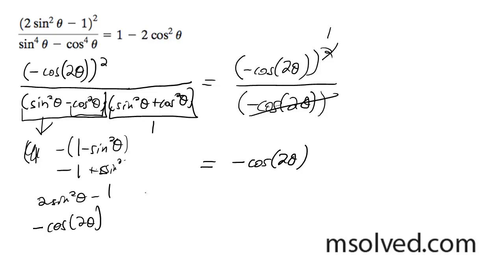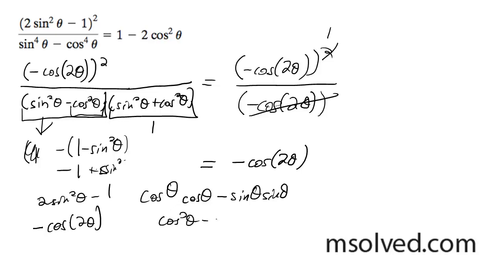The double angle is in the form cosine theta cosine theta minus sine theta sine theta, which is the same thing as cosine squared theta, and we want to manipulate this into what we have on the right side up at the top here.